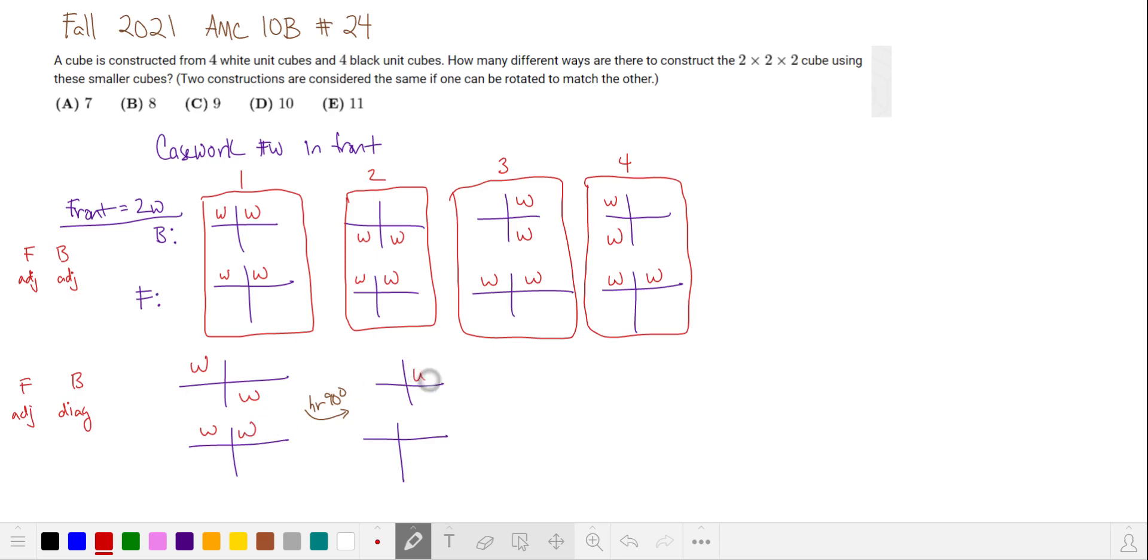So this white cube in the front on top, when it gets rotated, it ends up on top in the back. This white cube in front in the top left goes over to the top right in front. This white cube in the back top comes up to the front top. And this white cube, the bottom of the back moves over to the left.